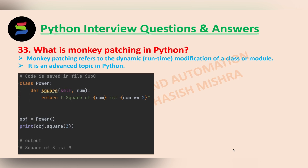Here we have a class called Power. We have a function named square, which returns the square of the input number. We are creating an object of the class and using that object, we are printing the square function with an input of 3. The output we are getting is 9.